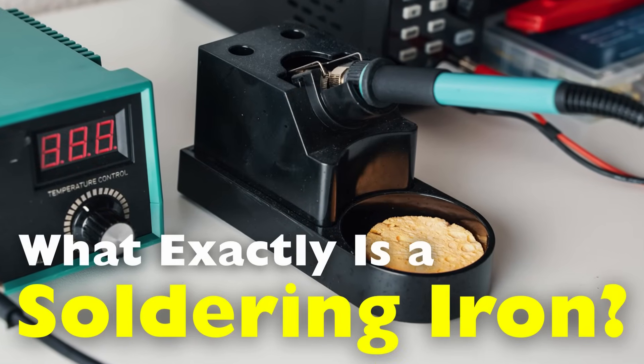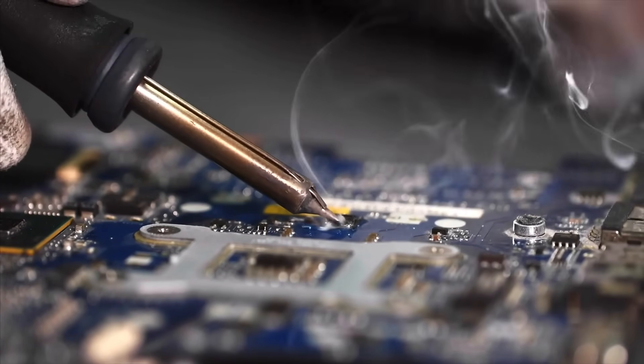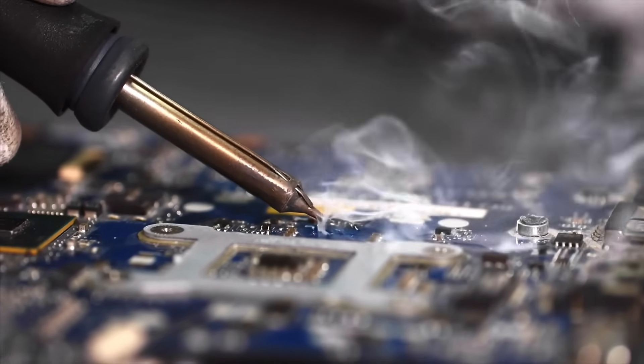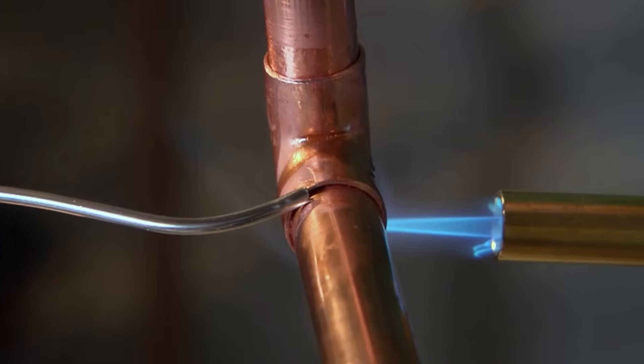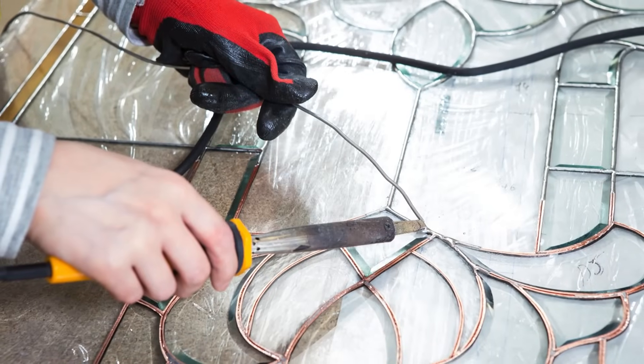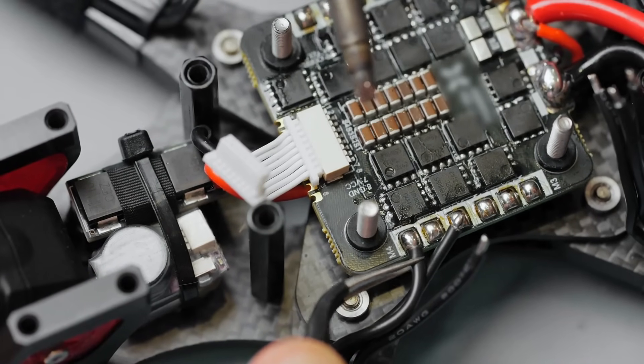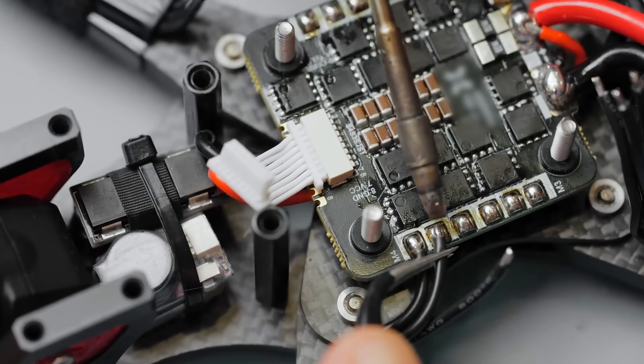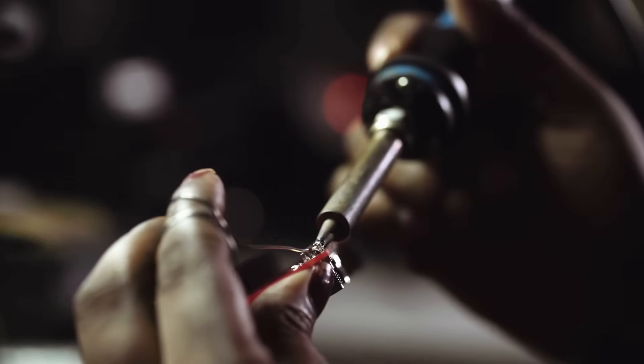But the truth is that this tool is far more versatile and historically meaningful than most people realize. In this video, we're diving deep into what exactly a soldering iron is, how it works, why it's designed the way it is, and how it became an essential tool in everything from electronics and jewelry making to plumbing, metalwork, and even stained glass art.